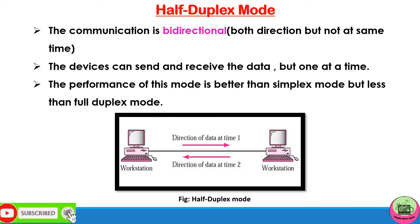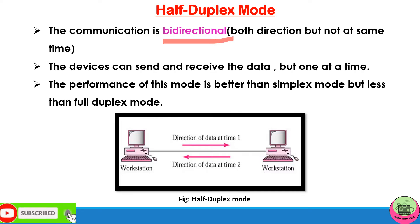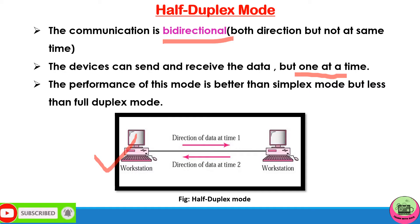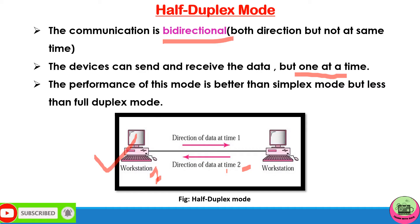Half-duplex mode: the communication is bidirectional, both directions, but not at the same time — be very clear about this and don't get confused with full-duplex. Devices can send and receive data, but one at a time. As shown in the figure, at time 1 the data is sent to the workstation, and at time 2 the data is received by workstation 1. The performance of this mode is better than simplex mode but less than full-duplex mode.